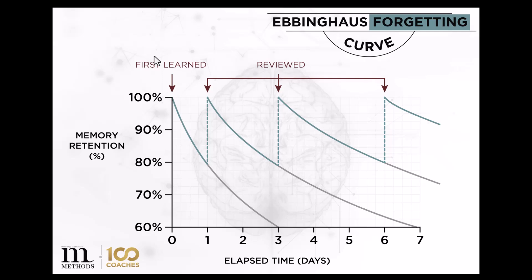This diagram, if you haven't seen it before, depicts the forgetting curve. Essentially, it shows how the human brain forgets things, but also how you can get your brain to remember things. The vertical axis is an indication of memory retention — how much of what you've learned do you retain. The horizontal axis simply depicts the passage of time.